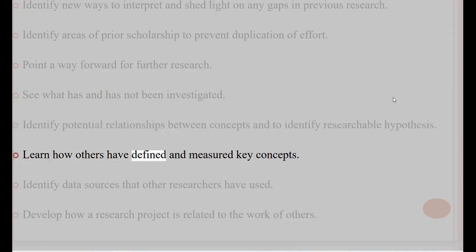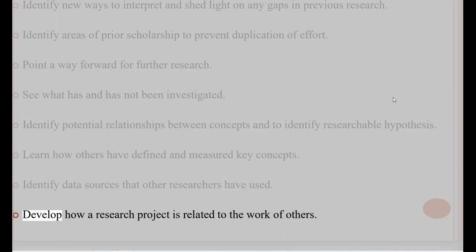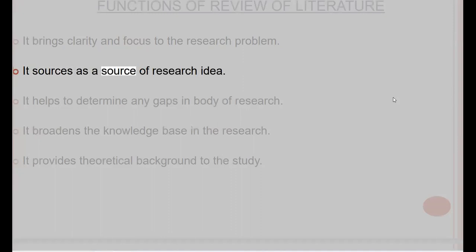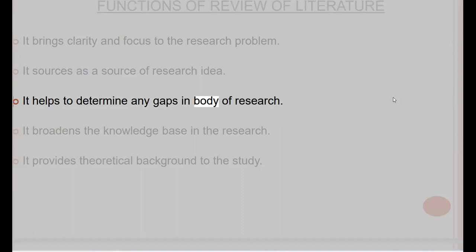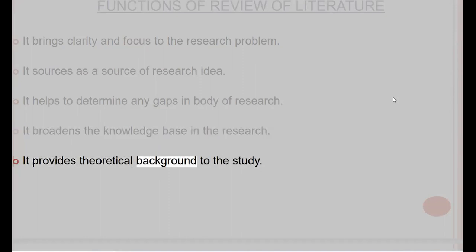A literature review also helps to identify potential relationships between concepts and to identify researchable hypotheses, learn how others have defined and measured key concepts, identify data sources that other researchers have used, and develop how a research project is related to the work of others. Functions of review of literature: it brings clarity and focus to the research problem, serves as a source of research ideas, helps to determine any gaps in body of research, broadens the knowledge base in the research, and provides theoretical background to the study.